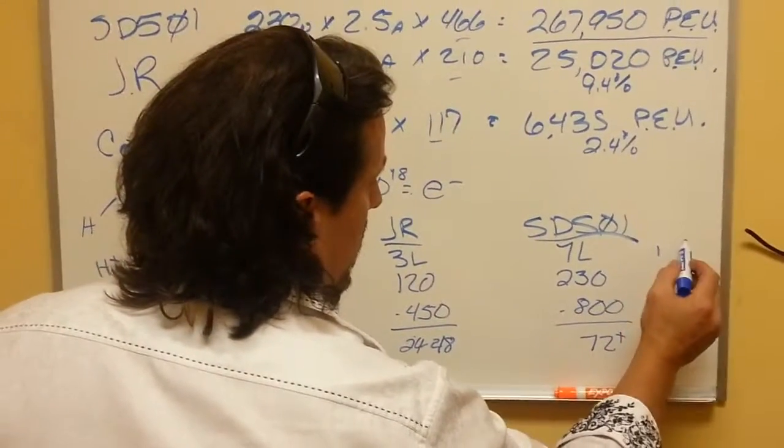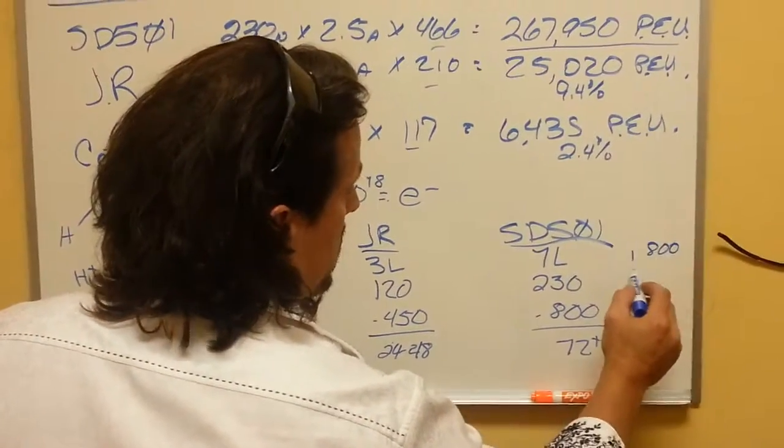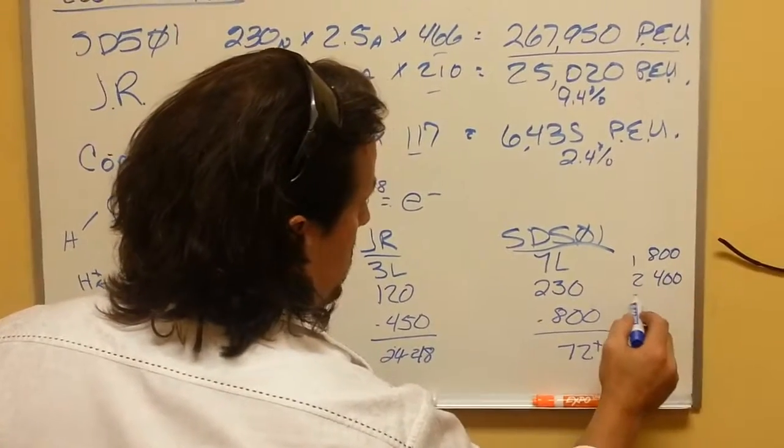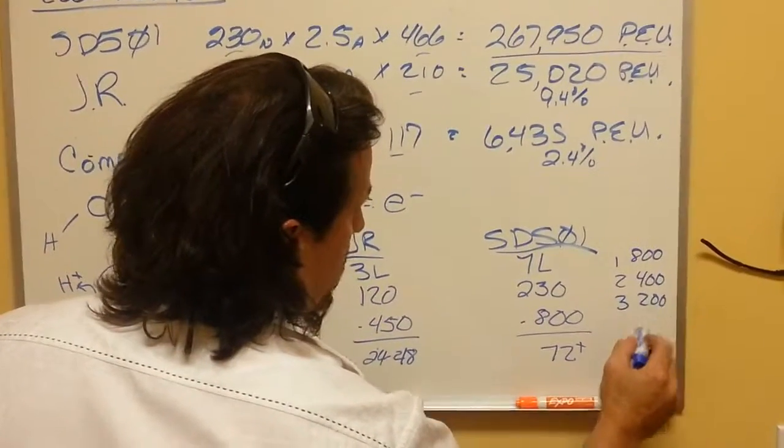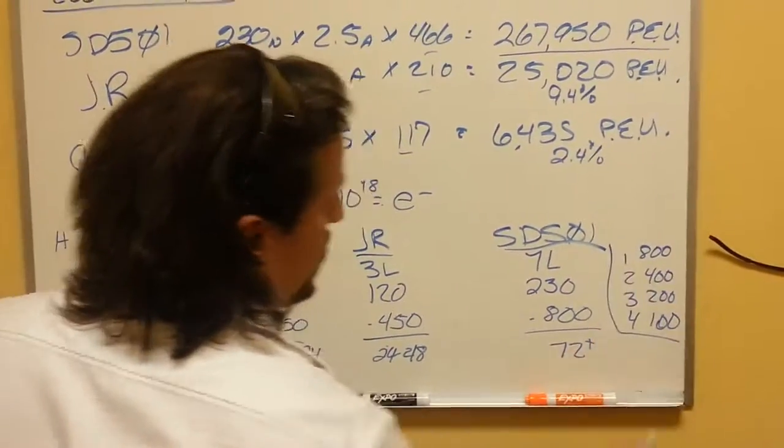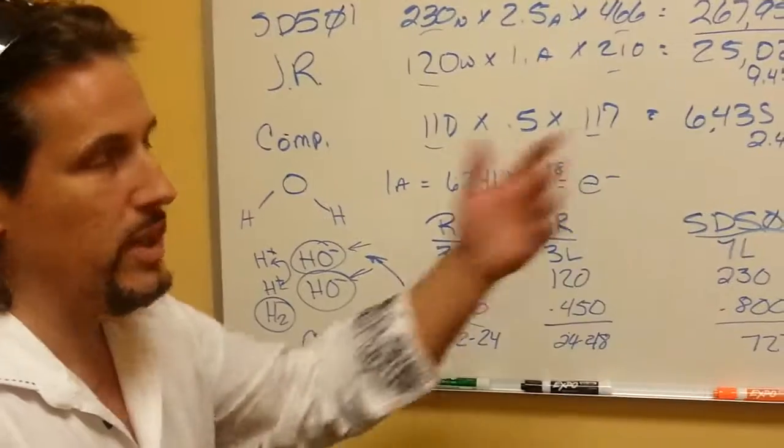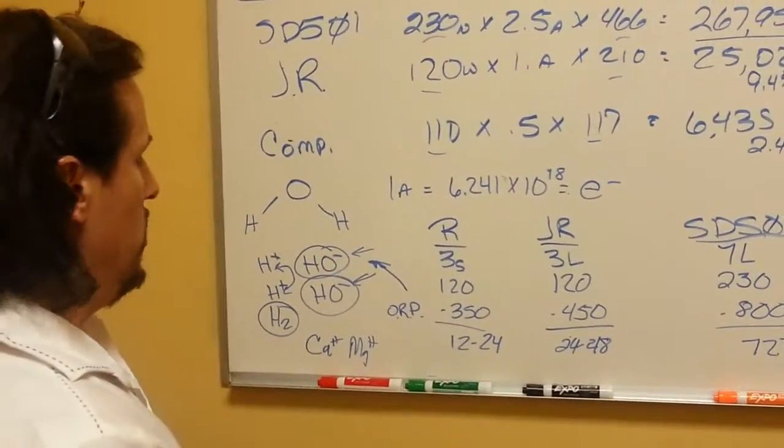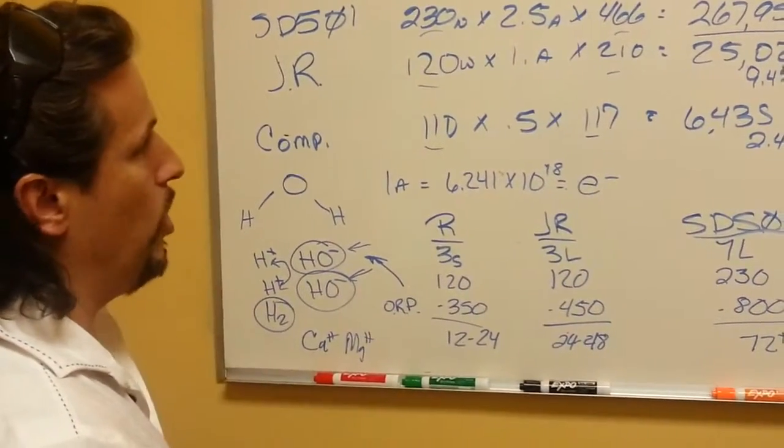So first day, if this is 800, goes to 400. Third day would be 200. Fourth day would be 100. That's not actual facts based on research. That's me playing with my ORP meter for a week and just testing the different types of water.